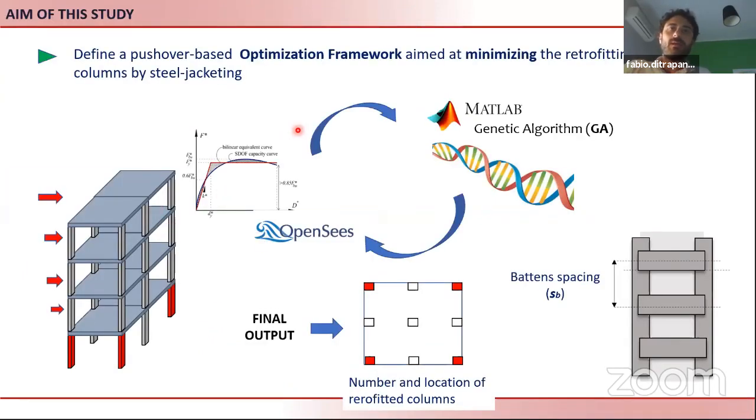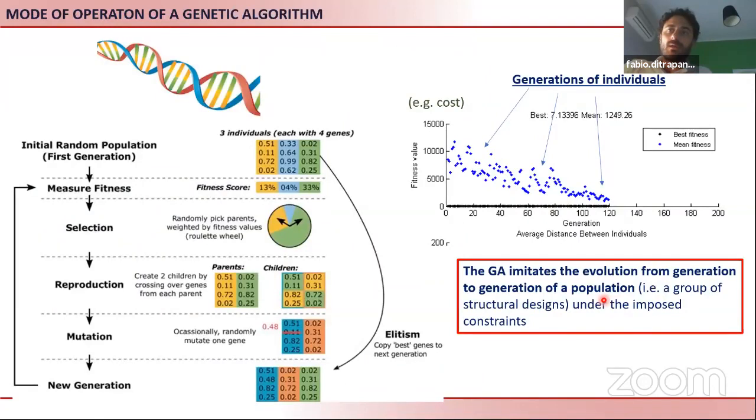What we propose is a genetic algorithm procedure in which we model the structure in OpenSees framework, and the OpenSees structure is controlled by MATLAB and by a genetic algorithm framework which, minimizing the retrofitting costs, will provide us the final position. So there is a topological optimization of the position of the columns to be retrofitted and minimum spacing of the buttons that we have to use.